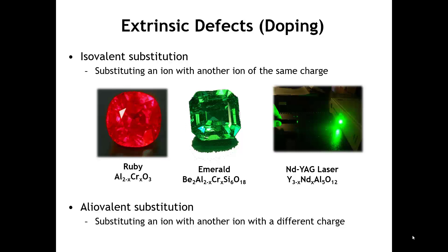The other type of substitution is called aliovalent substitution, where the ion that substitutes has a different charge than the ion it replaces. Because we must maintain charge balance, aliovalent substitution will trigger a change somewhere else in the crystal.